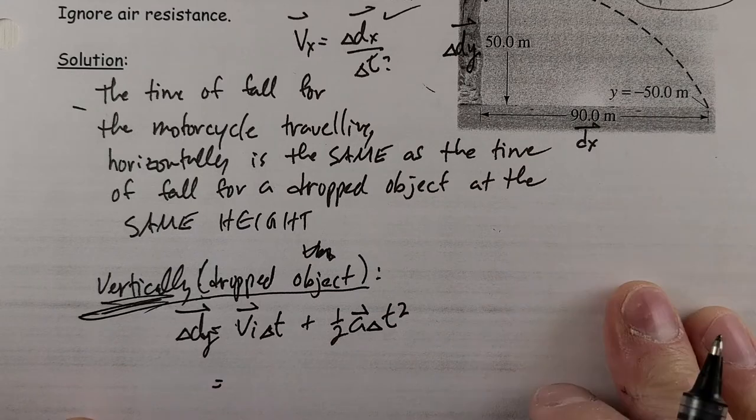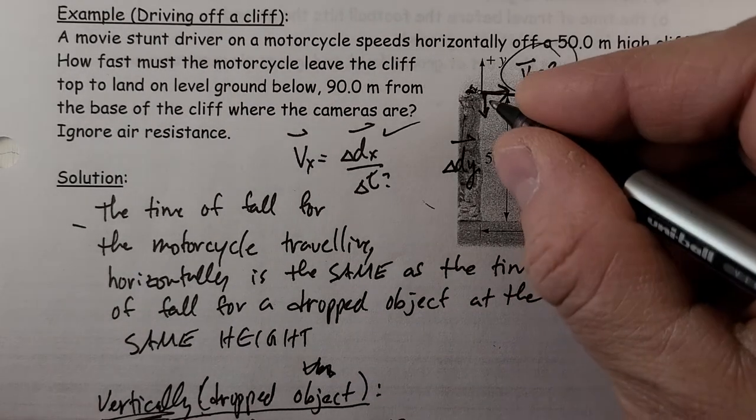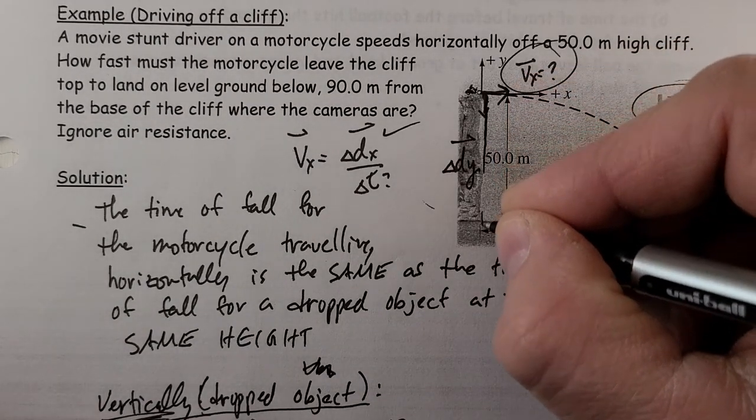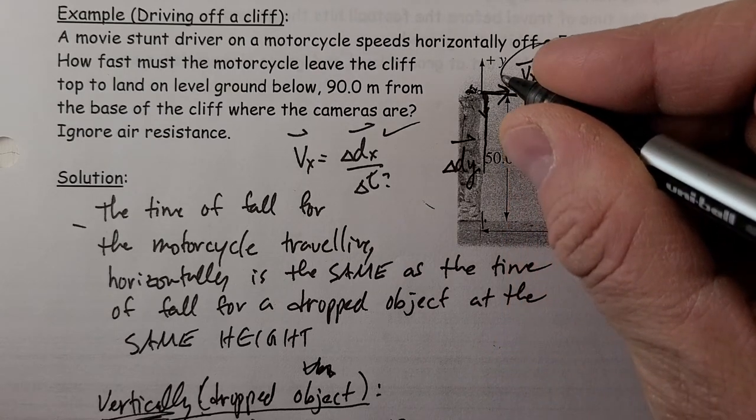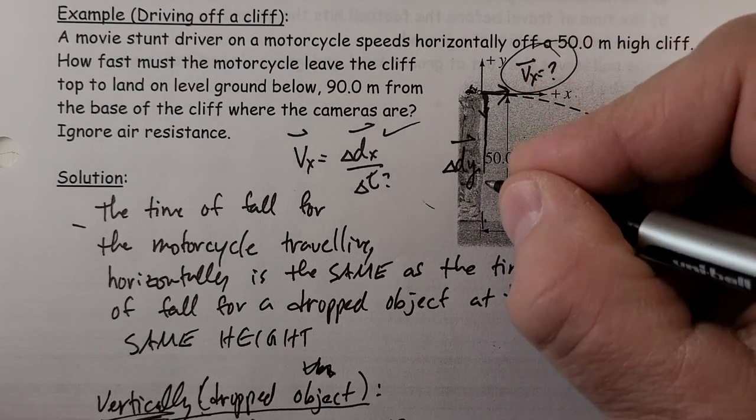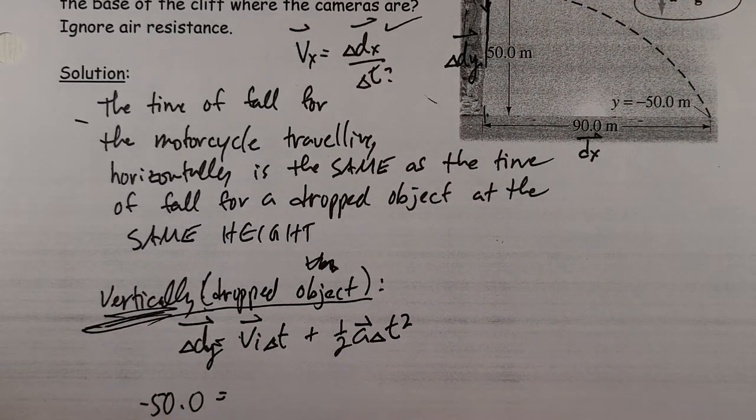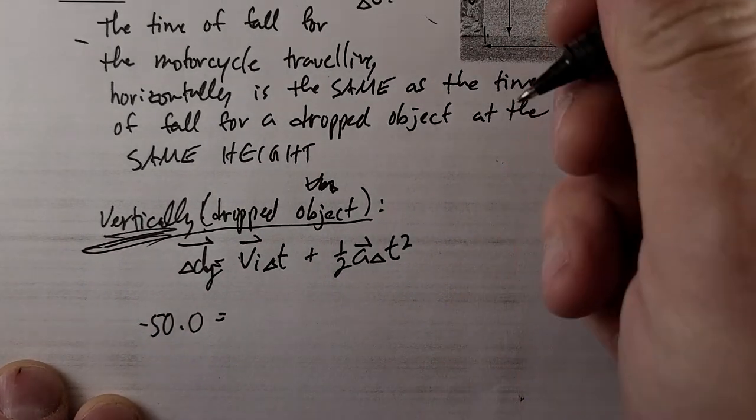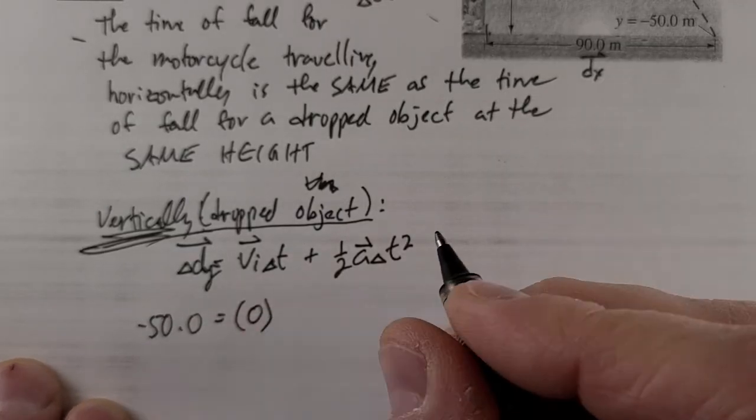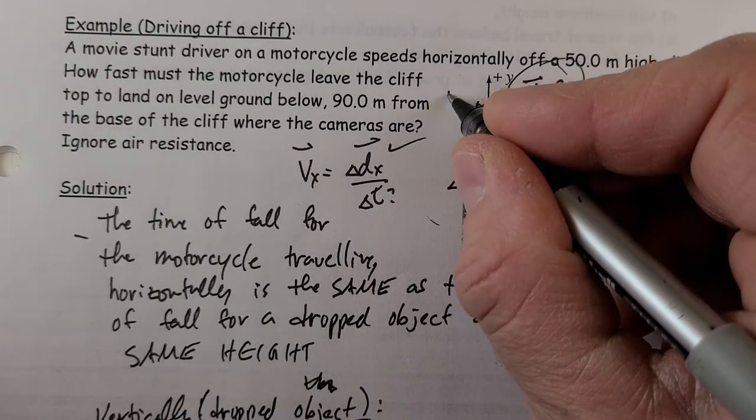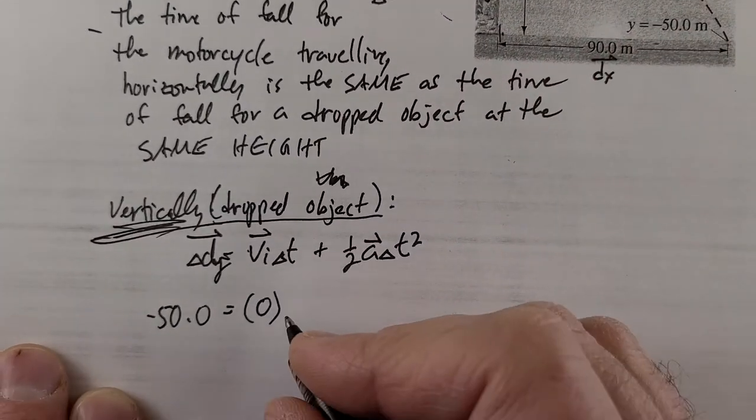A dropped object is going to be undergoing this movement, falling down. If it's going up, it's positive 50. If you're going down, it's negative 50. So be aware that the displacement has to be negative because you're going downwards. And if you're dropped here, the initial vertical velocity is zero.